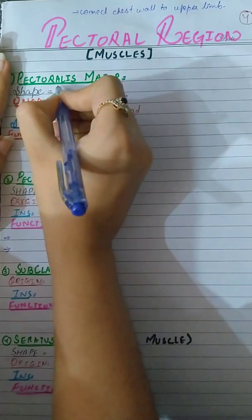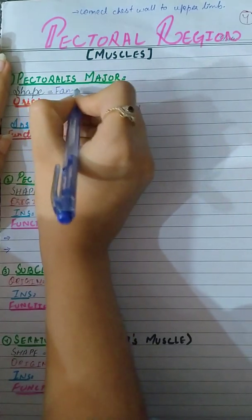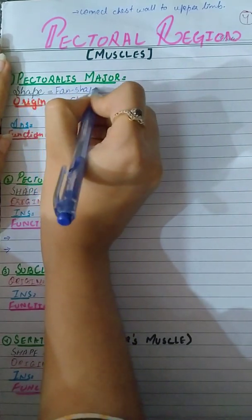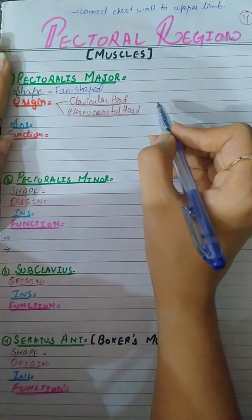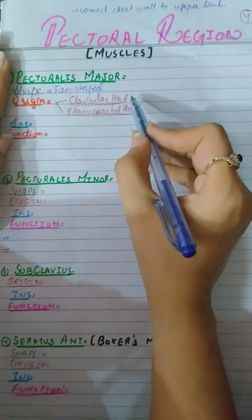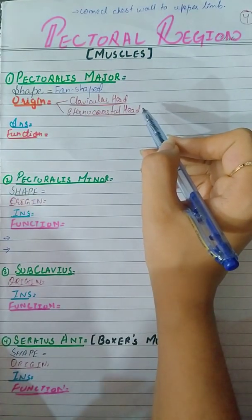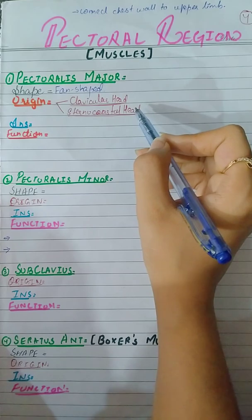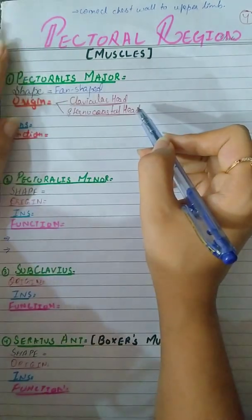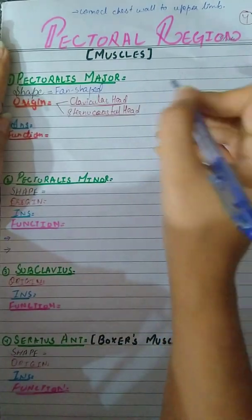Its shape is fan-shaped. Now its origin - it has two origins. The first one is clavicular and the second one is sternocostal. The clavicular head is from the anterior medial portion of the clavicle.